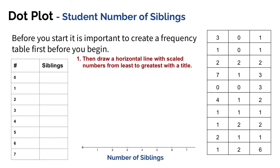I've got my data over here where I'm going to take these numbers and put them into a frequency table. When I looked at these numbers I saw that zero was the lowest number and seven was the highest, so that's why I went from zero to seven.